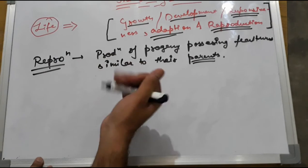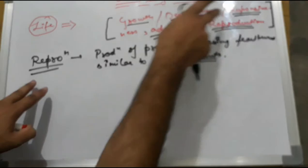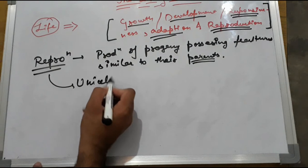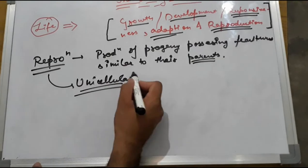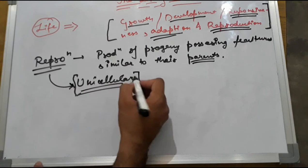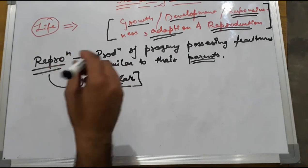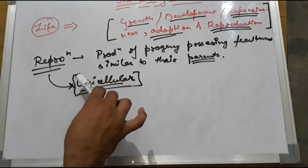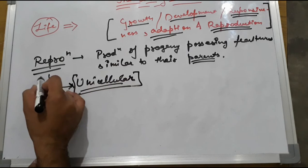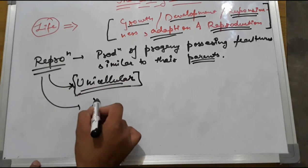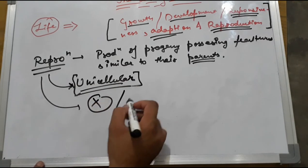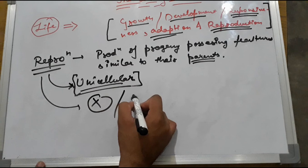If we say reproduction or growth, reproduction and growth are synonyms for the unicellular organism. That means if growth is in unicellular organism, that is the reproduction type of thing. Now reproduction, can it be a defining property? No. But at smaller extent we see that it is an inclusive property. We cannot define this but it could be an inclusive property of the living organism.